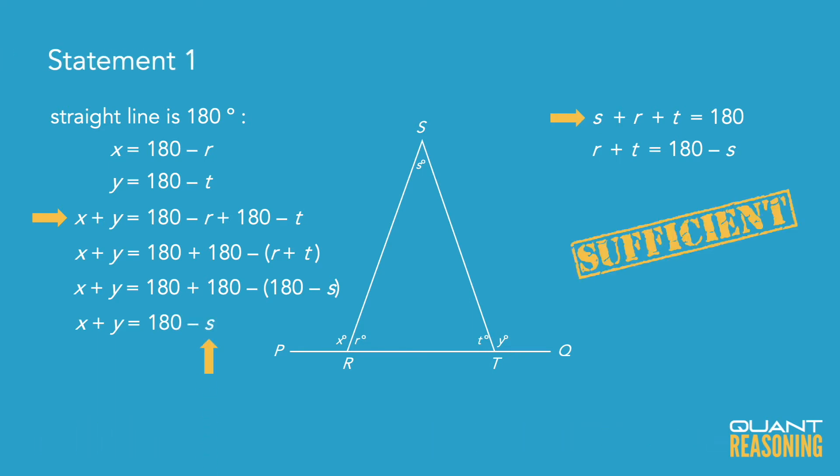Well, that means that statement one is sufficient on its own. Now statement two on the other hand only gives us the value of R. So that one is not sufficient on its own. And therefore the correct answer is A.